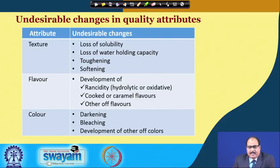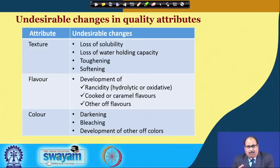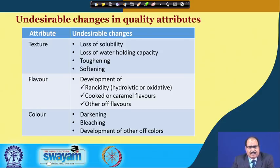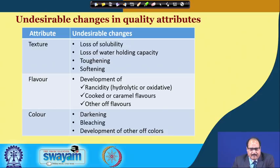The undesirable changes in food quality attributes include texture changes — there may be loss of solubility, loss of water holding capacity, the food may become tough or soft. In the case of flavour, depending upon components present in the food and the factors during processing and handling, there may be development of rancidity — either hydrolytic or oxidative rancidity. There may also be development of cooked or caramel flavour, or other off-flavours in the food.